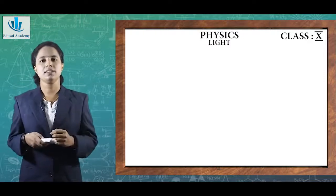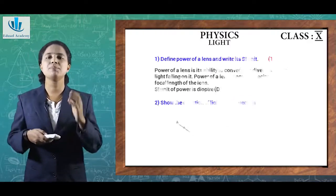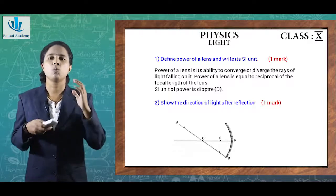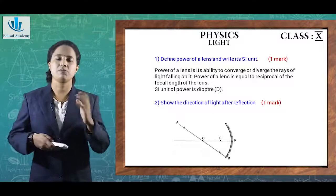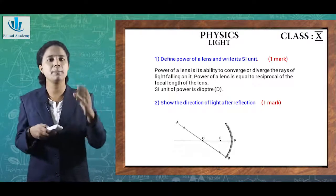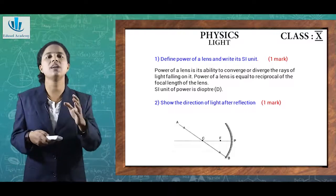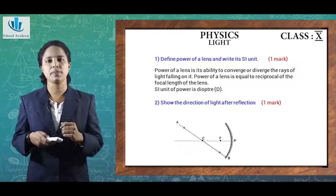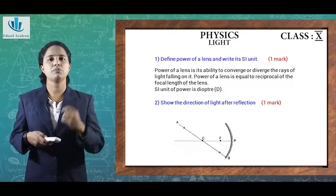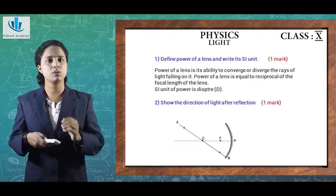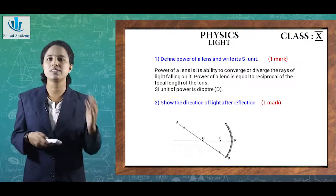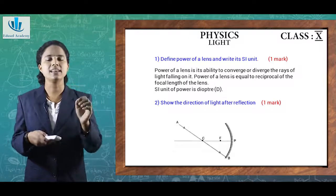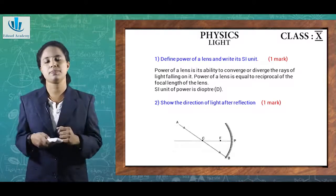First question: define power of a lens and write its SI unit. The power of a lens is its ability to converge or diverge the rays of light falling on it. Power of a lens equals the reciprocal of the focal length of the lens, and the SI unit of power is diopter.